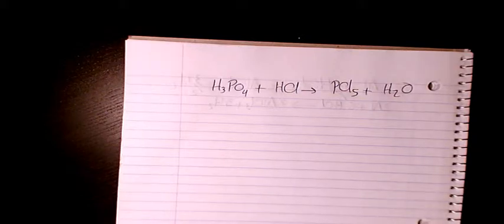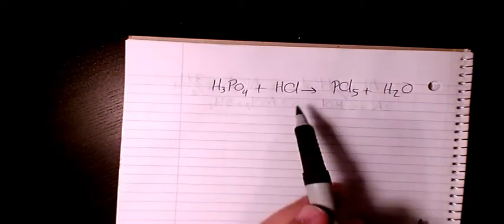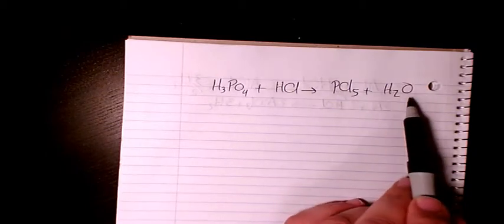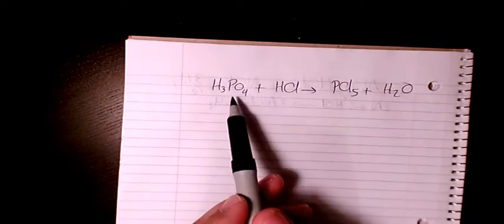What's up guys, this is Massey, welcome to my channel. In this video I want to show you how to balance this chemical reaction. So we have phosphoric acid plus hydrochloric acid gives PCl5 plus water. Start with phosphorus.